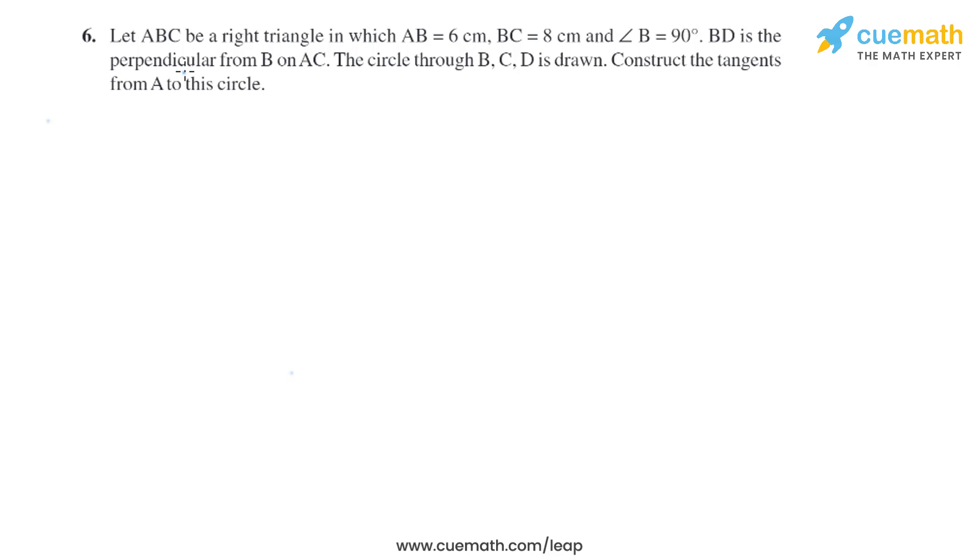Question 6 of this exercise says let ABC be a right triangle in which AB equals 6 cm, BC equals 8 cm, and angle B equals 90 degrees. BD is the perpendicular from B on AC. The circle through B, C, D is drawn. Construct the tangents from A to this circle.